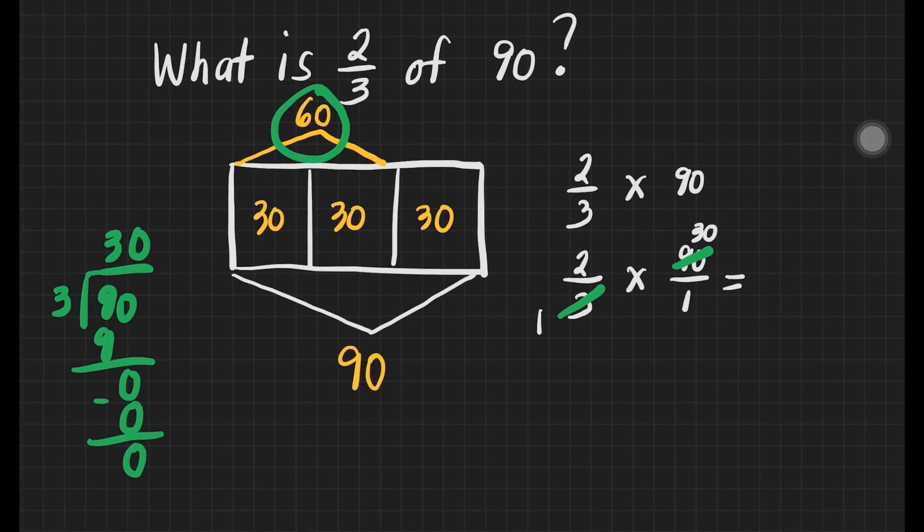We can now multiply. 2 times 30 is equal to 60. 1 times 1 is equal to 1. But this is not the final answer because 60 divided by 1 is equal to 60. So the answer is 60.